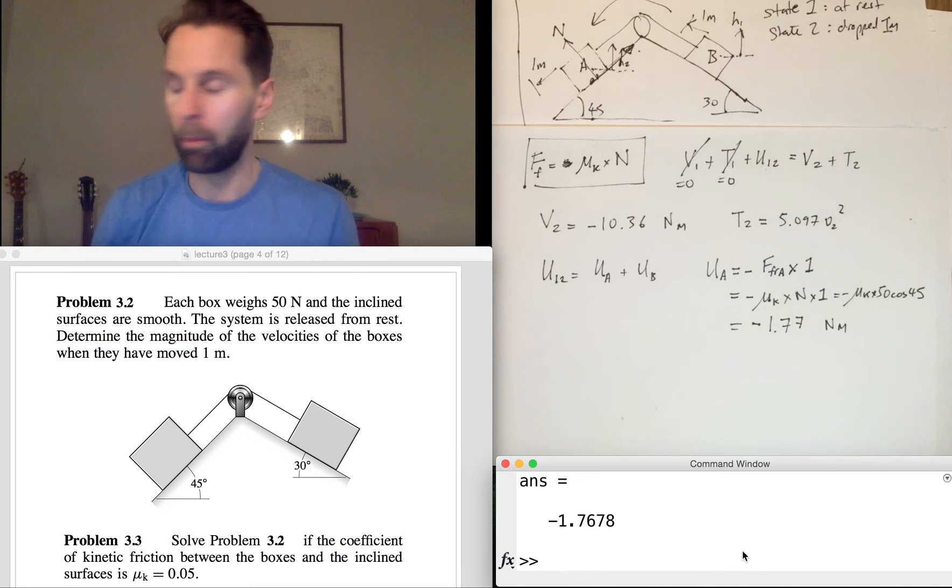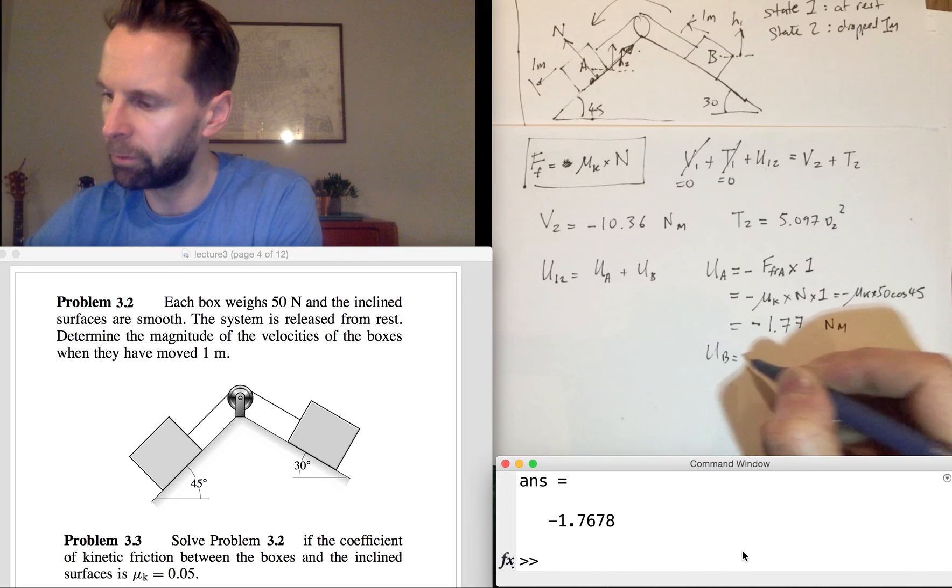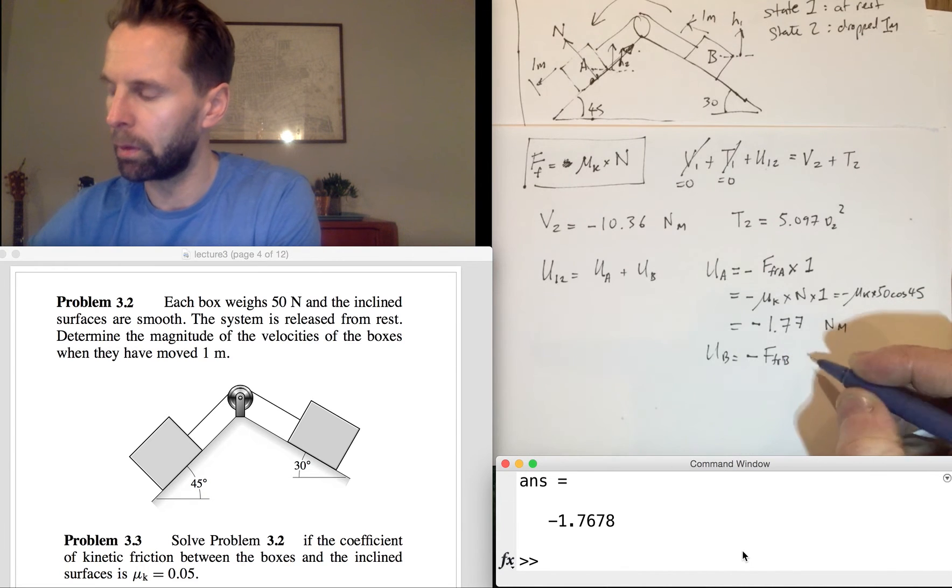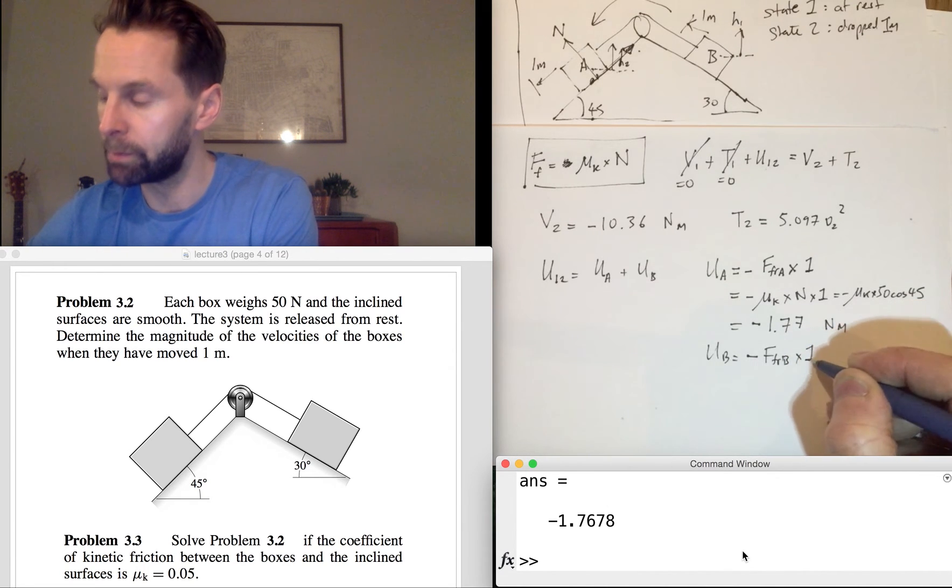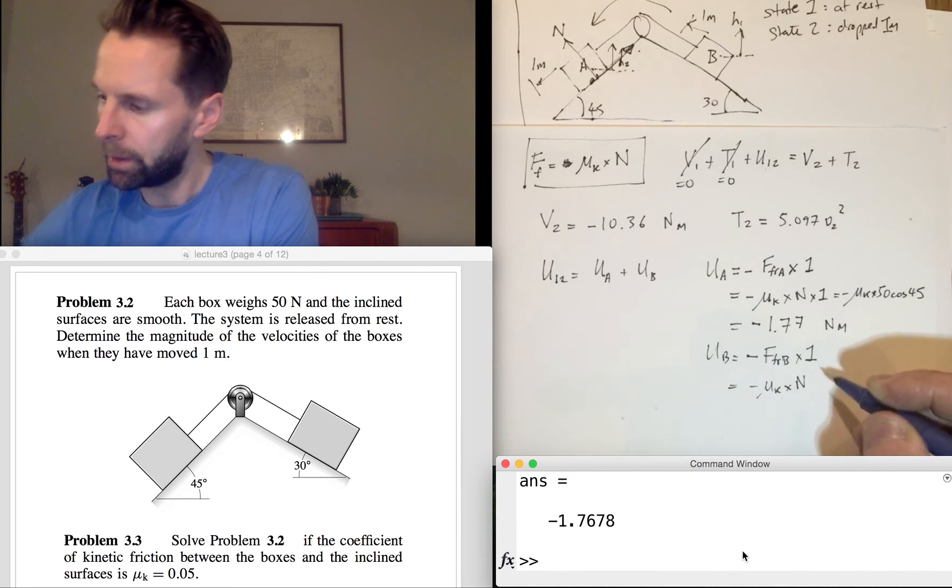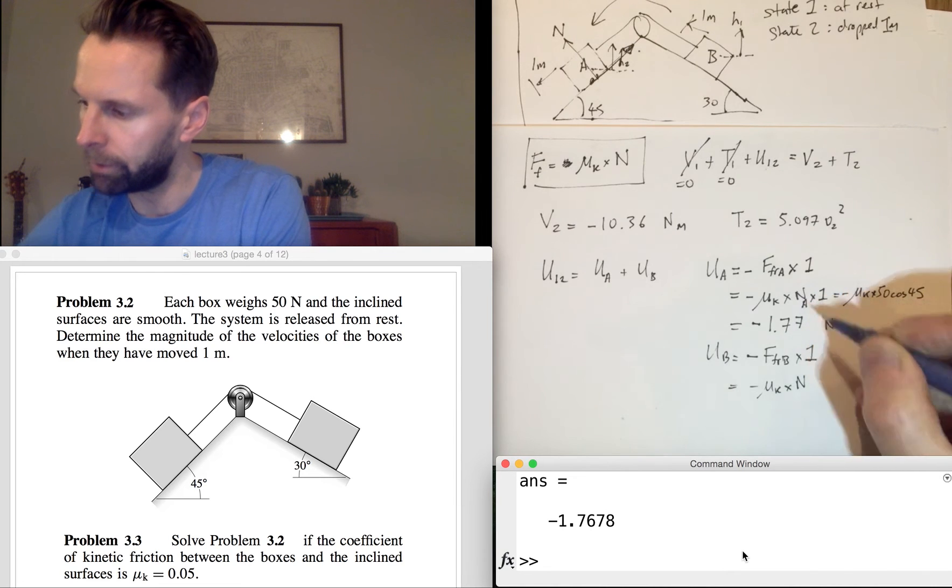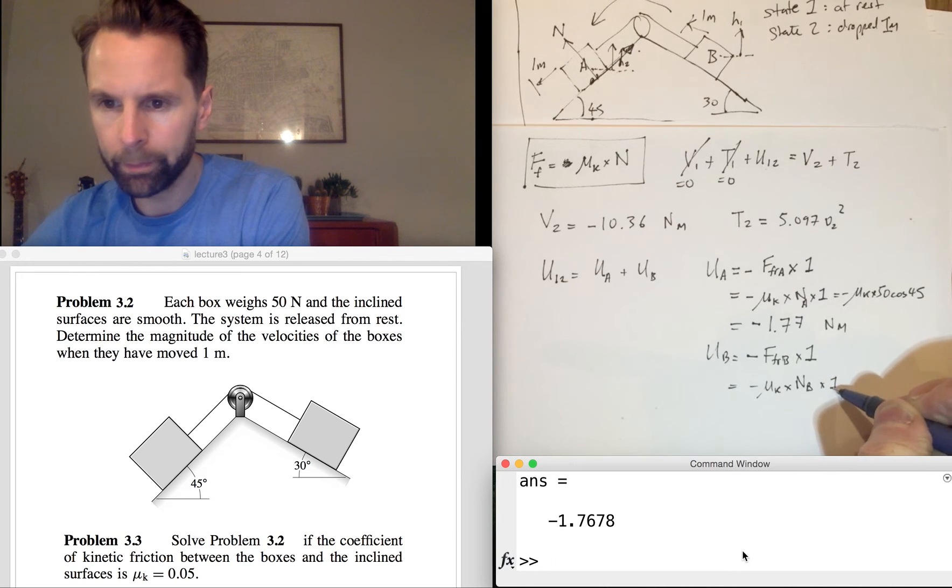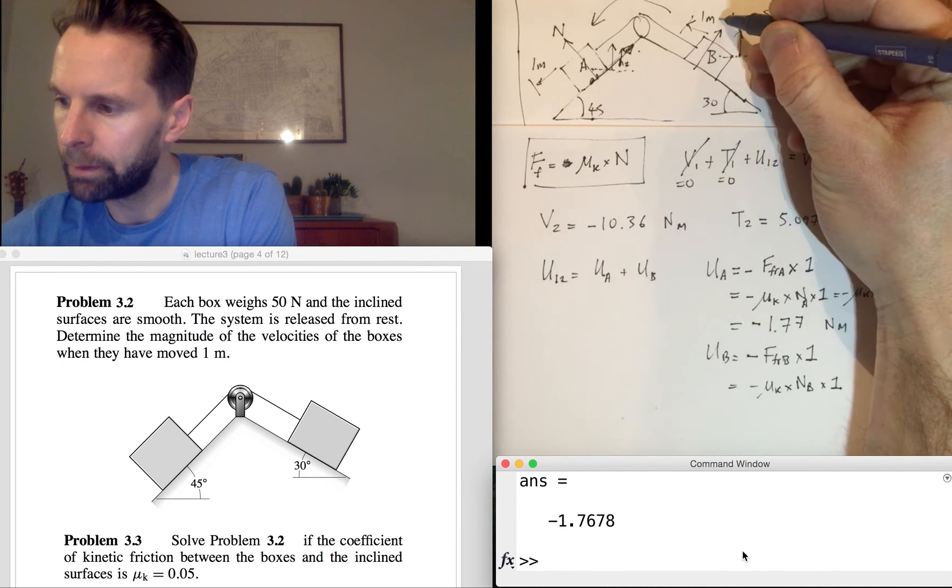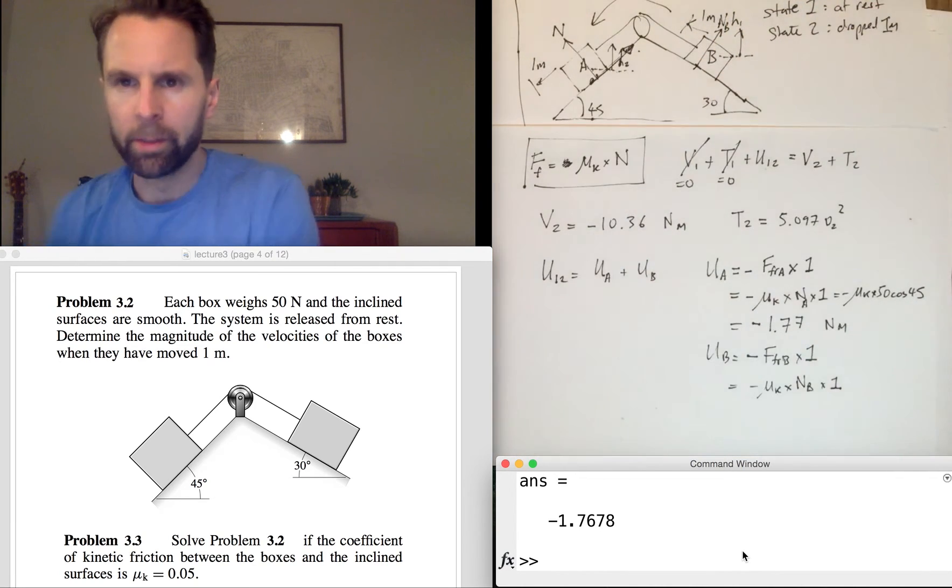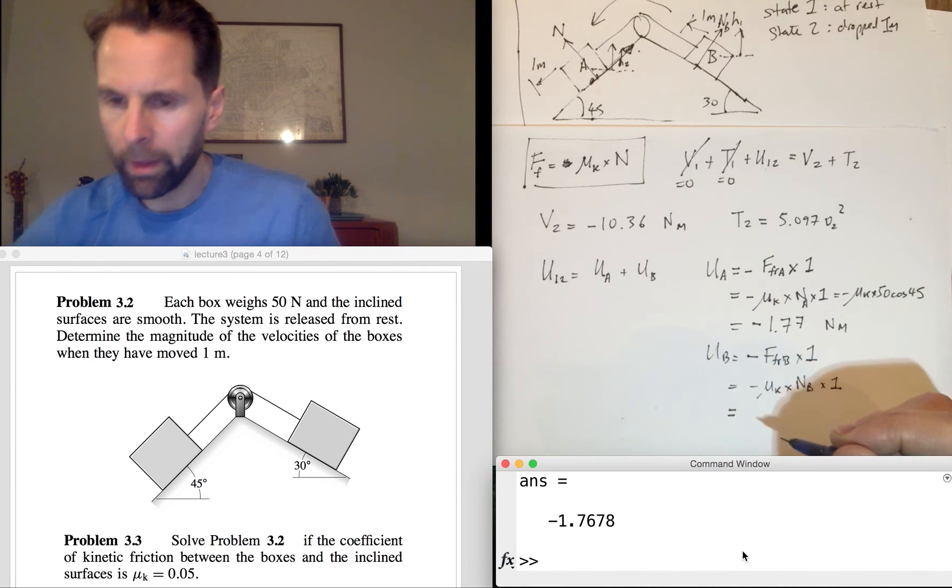So that's the work done on box A by non-conservative forces. We can do the same for box B. The frictional force on B times 1, it moves the same distance. This is the normal reaction of A and this is the normal reaction of B. Normal reaction of B is in that direction there.